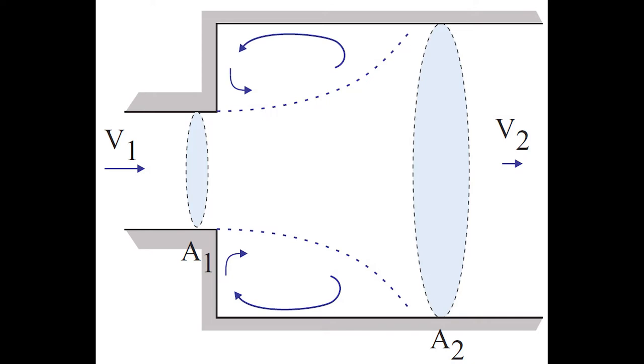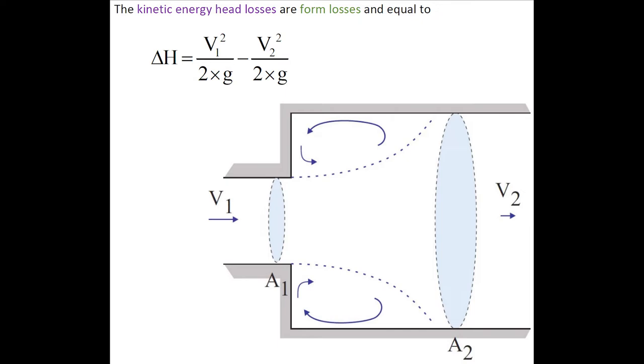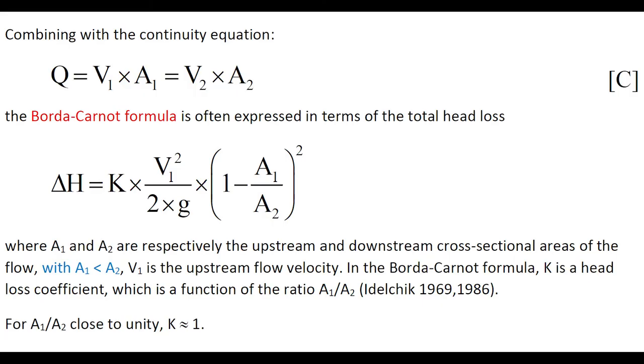Let us consider a sudden flow expansion. The kinetic energy loss, or form losses, are equal to V1 squared over 2g minus V2 squared over 2g, where V1 is the inflow velocity and V2 is the outflow velocity.